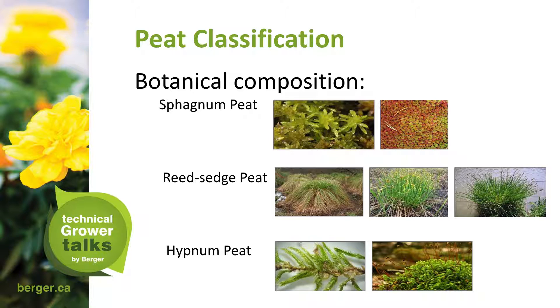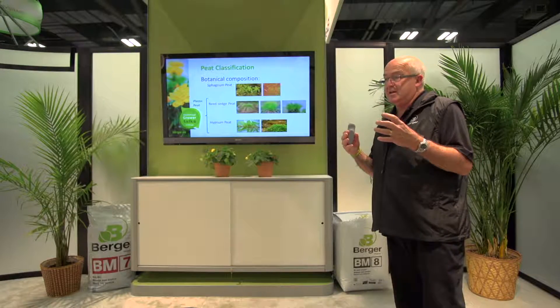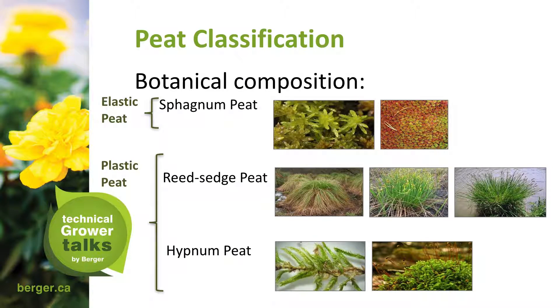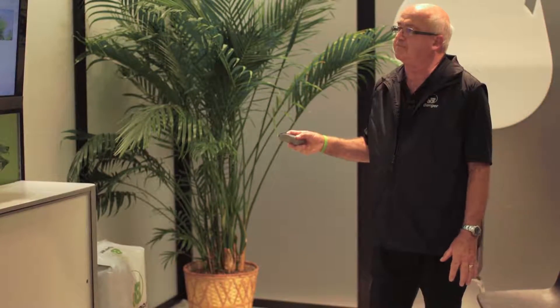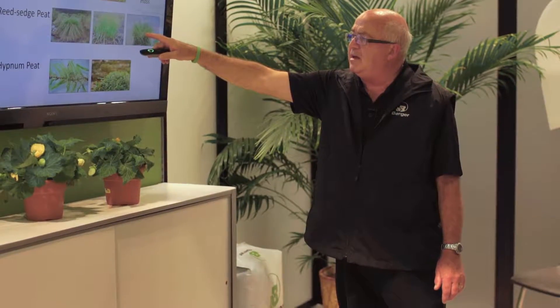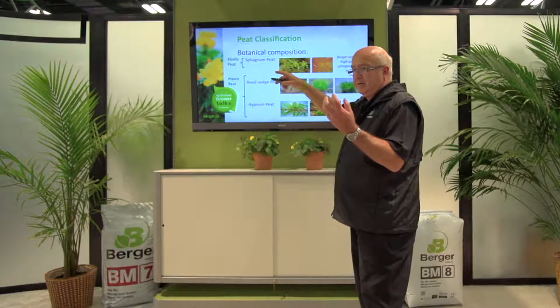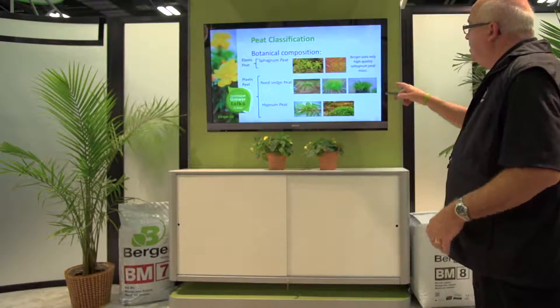Sphagnum peat is called an elastic peat — it gives and takes, can be compressed and decompressed, and has good value because of its structure. Sedge peats are called plastic peats because when they decompose they become black, mucky, and plasticky. Berger uses only high-quality sphagnum peat moss. One example of a sedge or carex peat would be the original Michigan black toe peat — that black, heavy peat — which would be considered a reed sedge or carex peat.